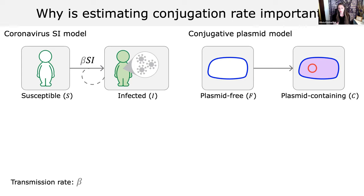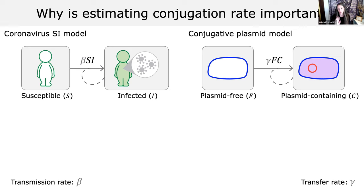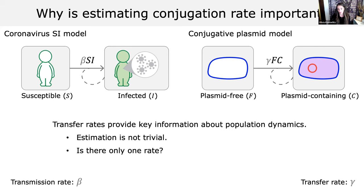The way we model conjugation and think about plasmid spread is really similar — almost the same. When we care about plasmids in communities in the gut, hospital settings, or wastewater, we want to know how fast these plasmids are spreading through our populations over time. Similar to the COVID example, we're tracking plasmid-free types and plasmid-containing types. The way they turn into plasmid-containing types is the transfer rate — that parameter we're all interested in estimating correctly. Conjugation is cell-to-cell contact dependent, so we add the law of mass action into our models.